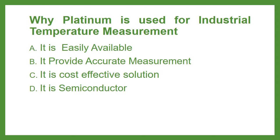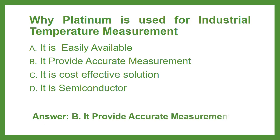Why is Platinum used for industrial temperature measurement? Option A It is easily available, Option B It provides accurate measurement, Option C It is a cost-effective solution, or Option D It is a semiconductor. The answer is Option B: It provides accurate measurement.